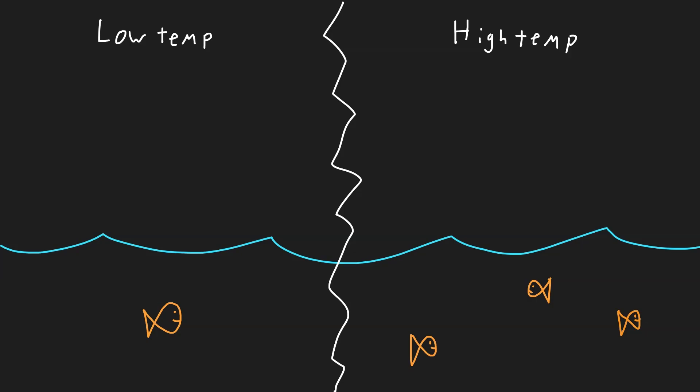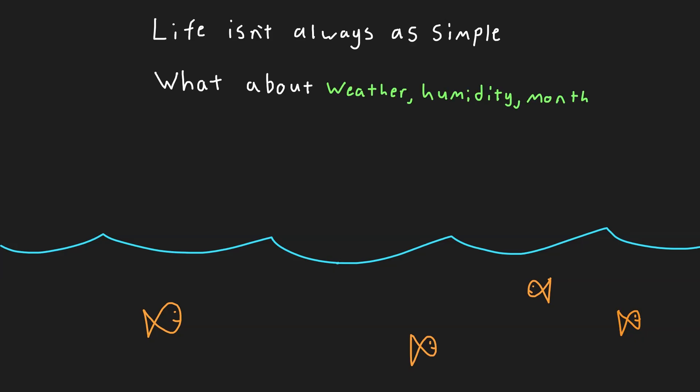While we noticed a positive linear relationship for temperature, life is usually not so simple and multiple variables may be needed to explain the full story. If we were to add another variable such as weather or temperature by time of day, this simple linear regression turns into a multiple regression and can help refine the fishing strategy even more. This can also help account for other scenarios like if it is hot but cloudy or cold but humid.